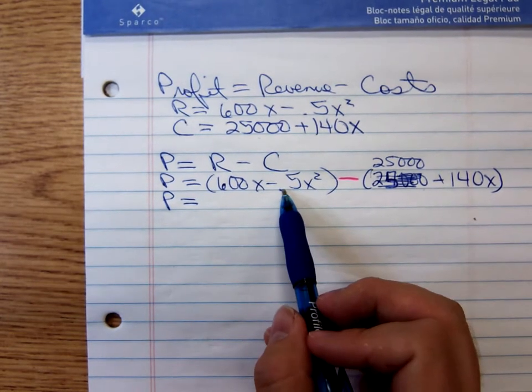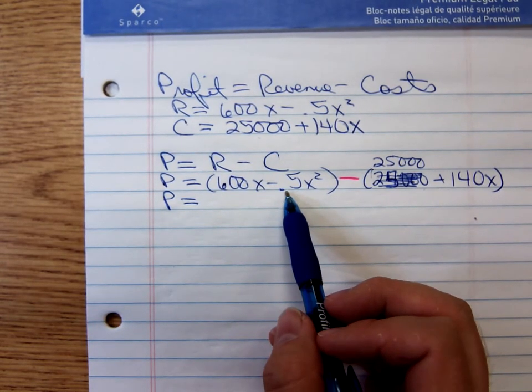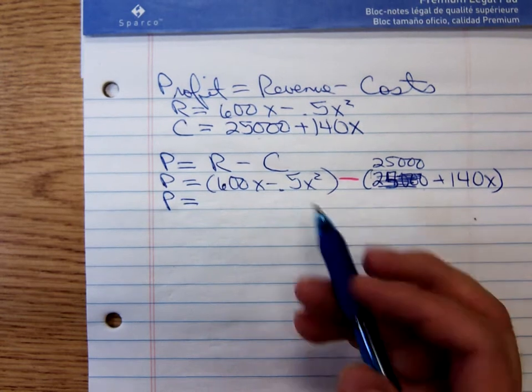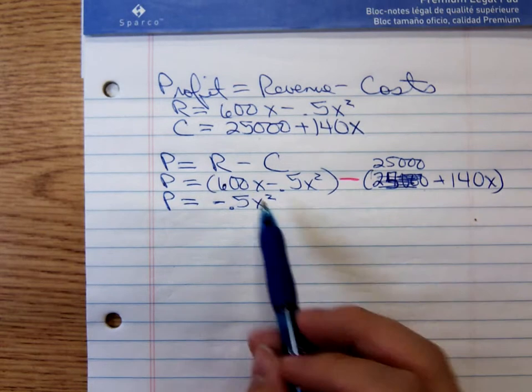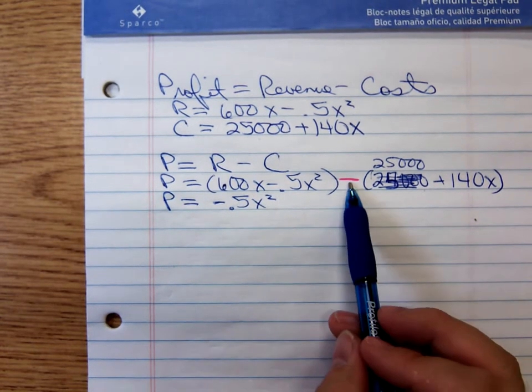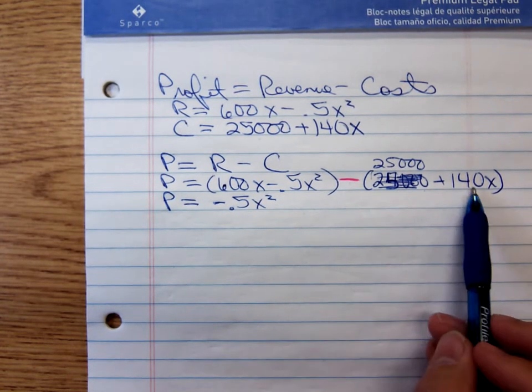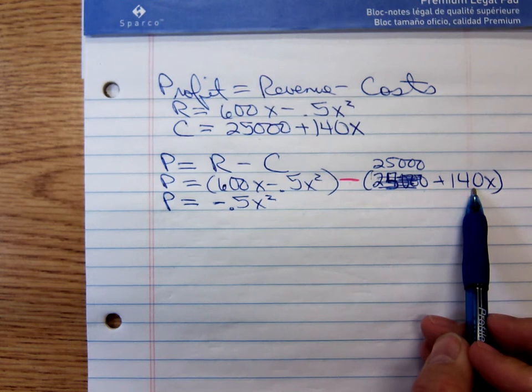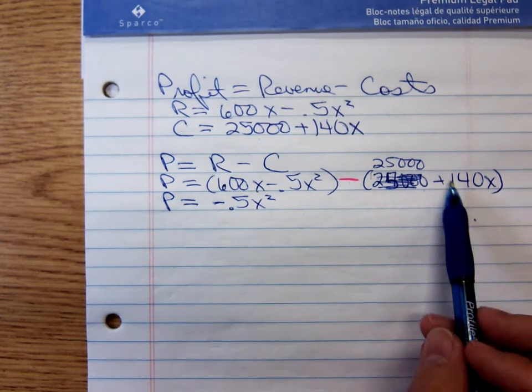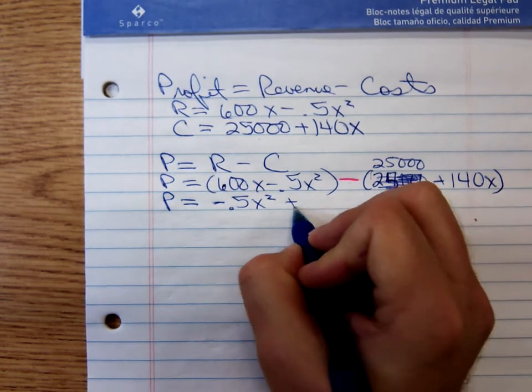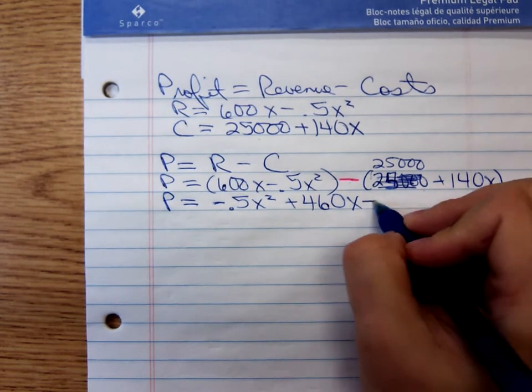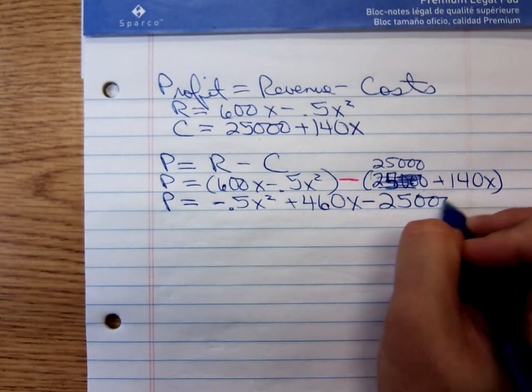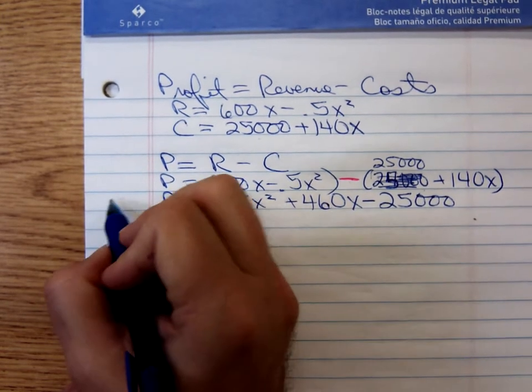So I'm going to write this profit function in descending order based on exponents. So we'd have a negative 0.5x squared. We have a 600x. Remember, you're going to have to distribute that minus. That's going to become a minus 140x. 600 minus 140. That's a positive 460x. Distribute that minus. That becomes a minus 25,000. So here's my profit function.